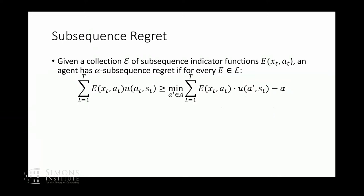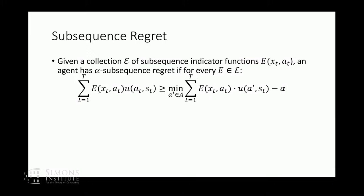Suppose I've got a collection of sub-sequence indicator functions — which look a lot like the events I was talking about — that, as a function of external context and the action you play, tell you if today's round is part of a sub-sequence I care about. I can talk about sub-sequence regret: the cumulative utility obtained on the rounds for which this sub-sequence was active should be at least as large as the utility I would have gotten had I consistently played the best fixed action on that sub-sequence. I want this to hold simultaneously across all sub-sequences, even though each day can belong to multiple sub-sequences.